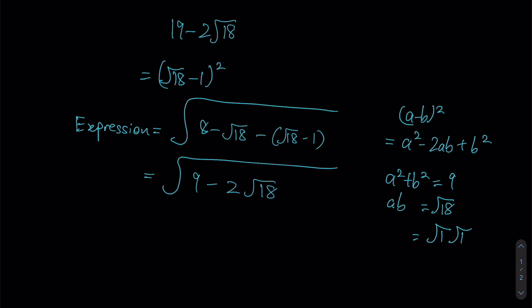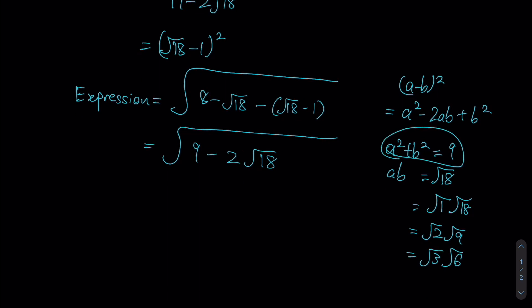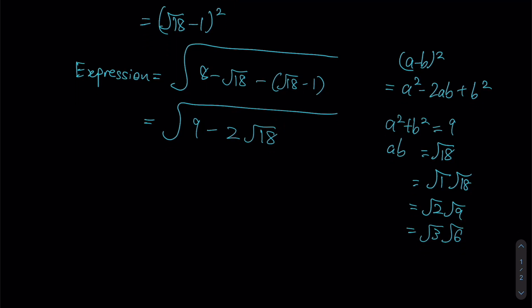So again, let us list down those possible products, and we should have three sets as mentioned earlier. This time we want the sum of our squares, a squared plus b squared, to be equal to 9. Keeping that in mind, we should see that root 3 and root 6 are my only possible options.